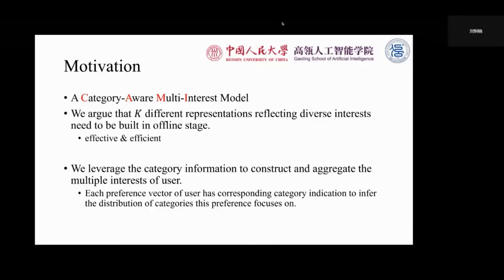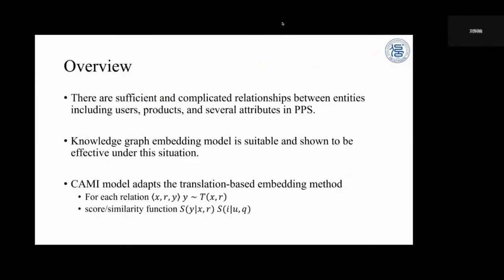Specifically, each preference vector of a user has a corresponding category indication to enforce the distribution of categories this vector focuses on. Next, I will give you an overview of the KAMI model. Different from the web search scenario, there are sufficient relationships between entities including users, products, and several attributes in personalized product search. KG-based models are suitable and shown to be effective under this situation in previous studies. KAMI model follows this paradigm and adapts the translation-based embedding method.